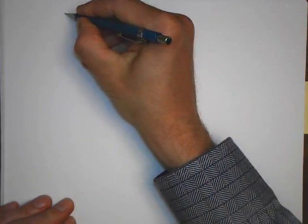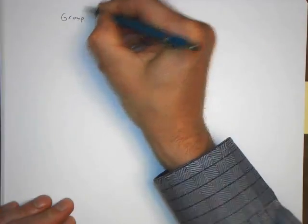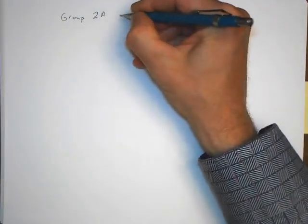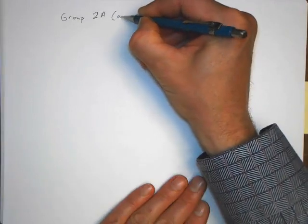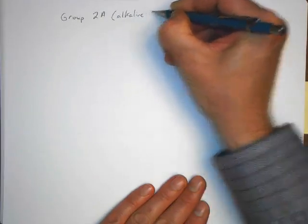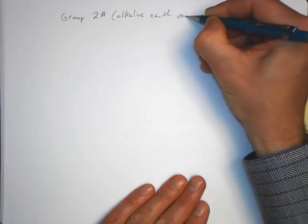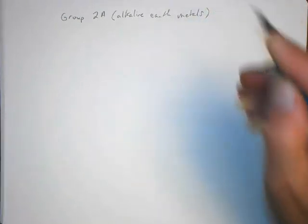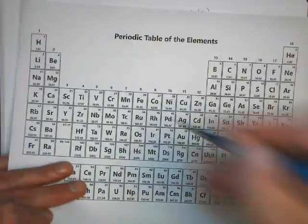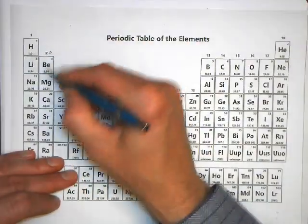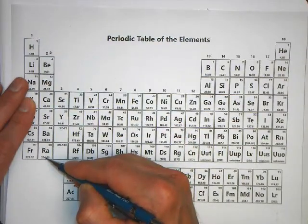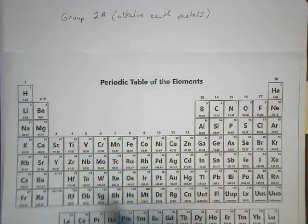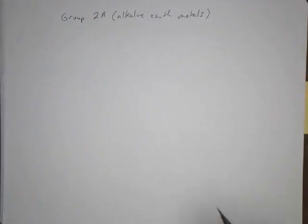Let's look at the next group. These are called the alkaline earth metals. What we're talking about here, the Group 2A, is going to be beryllium, magnesium, calcium, strontium, barium. This group here, these are the alkaline earth metals.